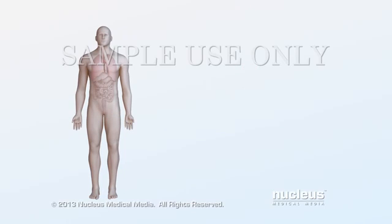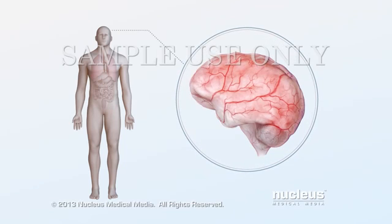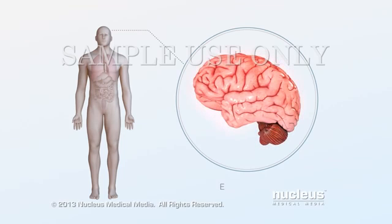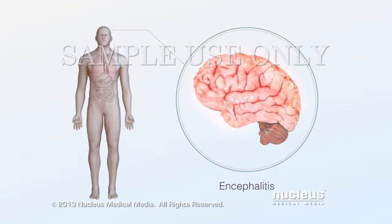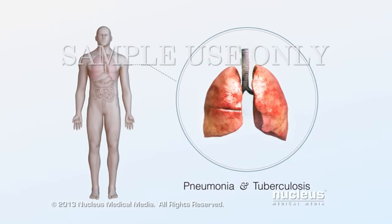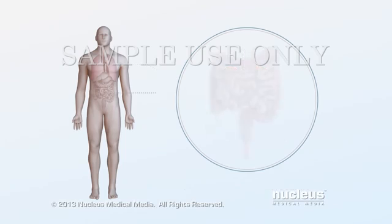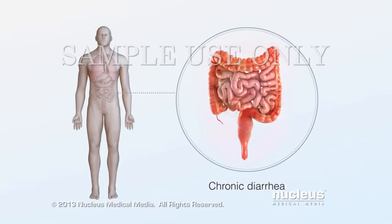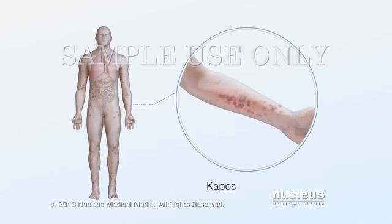Some of the common AIDS-related opportunistic infections are: inflammation of the tissues covering your brain and spinal cord, called meningitis; inflammation of your brain, called encephalitis; respiratory illnesses such as pneumonia and tuberculosis; intestinal illnesses such as chronic diarrhea caused by infectious parasites; and cancers such as Kaposi's sarcoma and non-Hodgkin lymphoma.